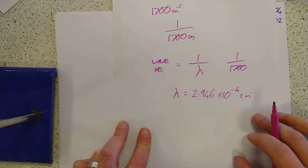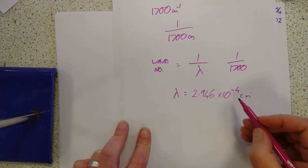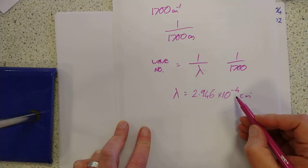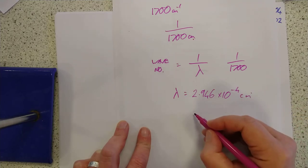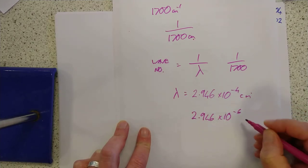and then the second stage is change that into meters, because that's what they're asking for, the wavelength in meters, which will be divided by 100, of course. So we'll put another 2 on that. That will become 2.946 times 10 to the minus 6 meters.